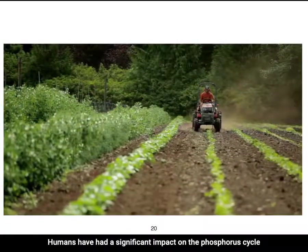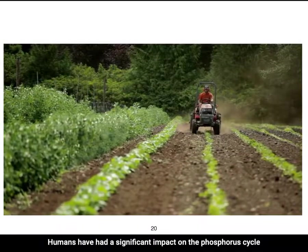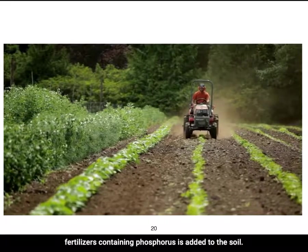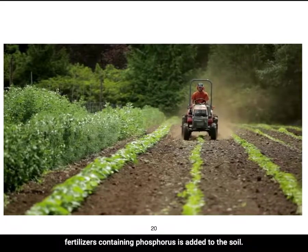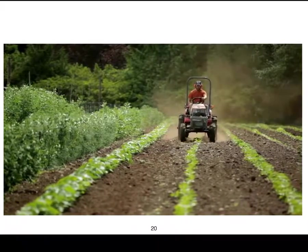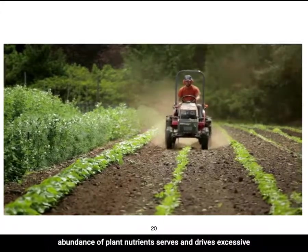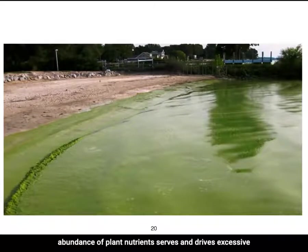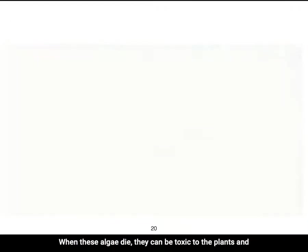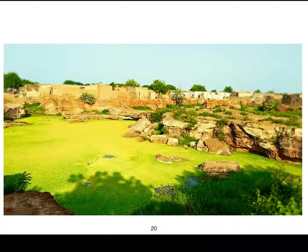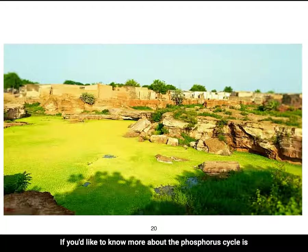Humans have had a significant impact on the phosphorus cycle. Fertilizers containing phosphorus are added to the soil, which helps plants grow; however, when levels of phosphorus are too high, the overabundance of plant nutrients drives excessive growth of algae. When these algae die, they can be toxic to the plants and animals in the ecosystem.